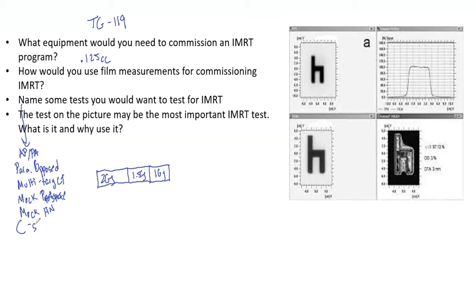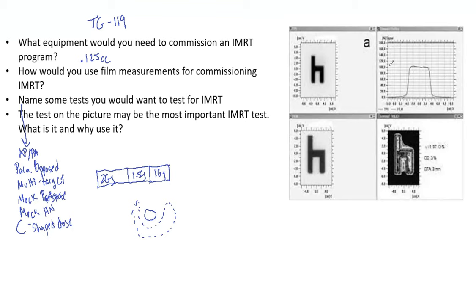Another option TG-119 mentions is a C-shaped dose distribution. Imagine you have a spinal cord and you want to treat all around it — if you can wrap dose around that spinal cord, that is the most difficult distribution to achieve. Use film to verify it and place a chamber inside the spinal cord region to verify it's not overdosed, then you can feel very good about moving forward with your IMRT program.